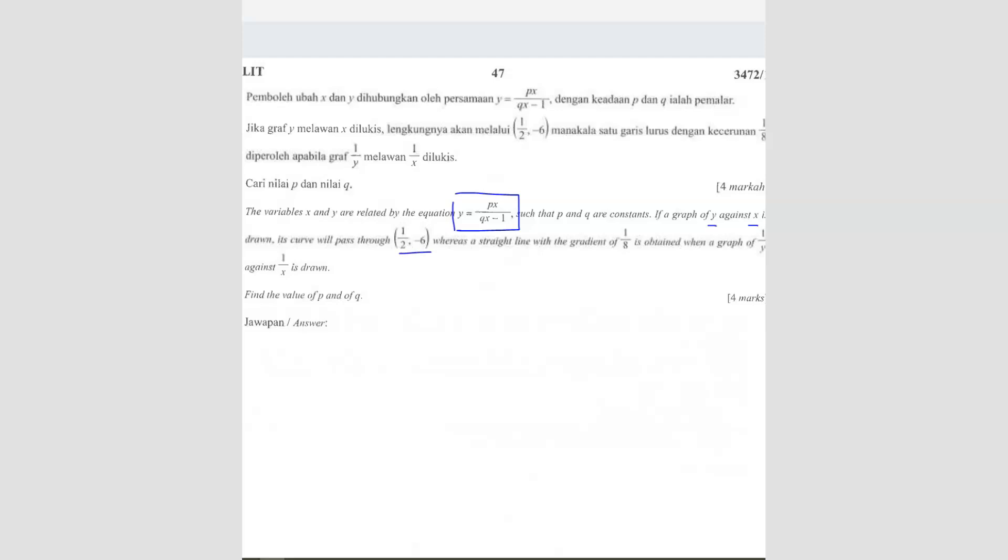So when they say y against x, this equation is already in terms of y against x. So from there, we can just straight away plot in this point. So you get your first equation. And then, whereas a straight line with gradient 1 over 8 is obtained when a graph of 1 over y is drawn against 1 over x is drawn.